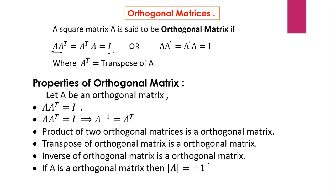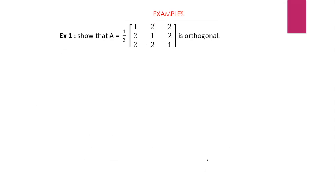Let us take an example on orthogonal matrices. The question is to show that A equals 1 by 3 times the matrix with first row 1, 2, 2; second row 2, 1, minus 2; third row 2, minus 2, 1 is an orthogonal matrix. So we have matrix A, and we will find A into A transpose.